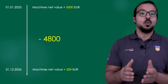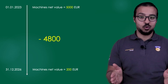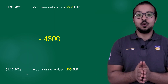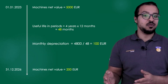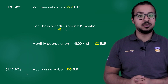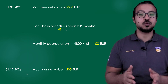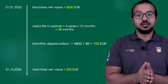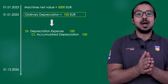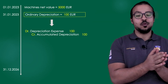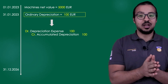Instead of posting all consumption in one period, we split this value over all periods within the useful life. We have 4,800 euros and a useful life of 4 years — 4 years multiplied by 12 months gives 48 months — which means a depreciation expense of 100 euros per month. So every month we post a debit to depreciation expense for 100 and a credit to accumulated depreciation for machines for 100.